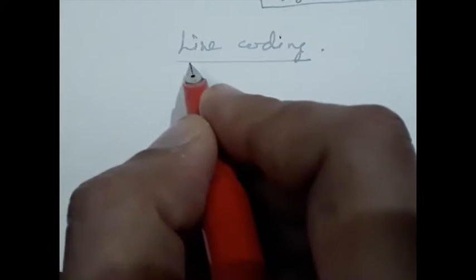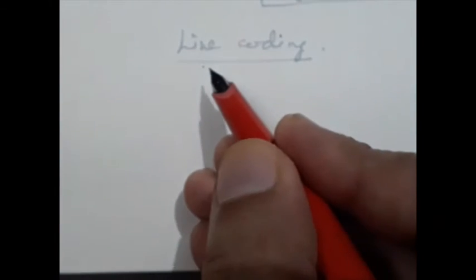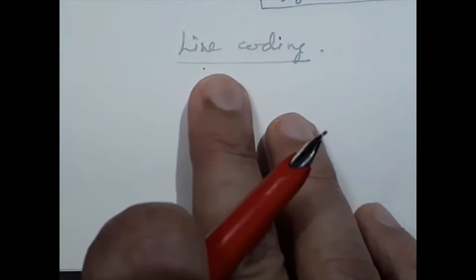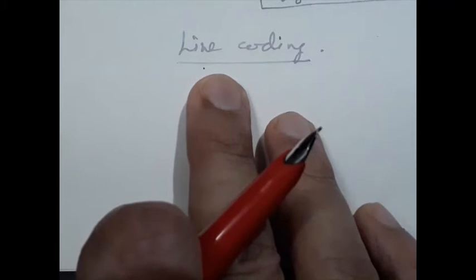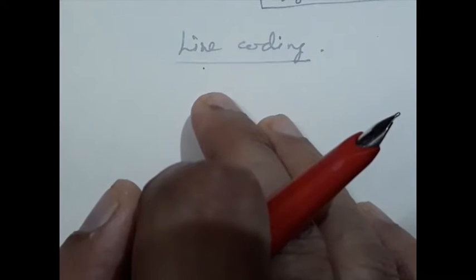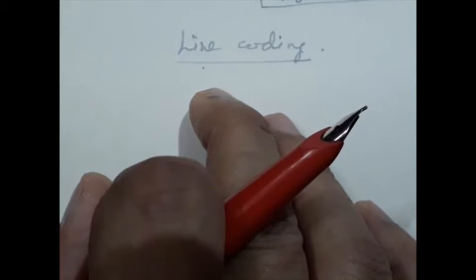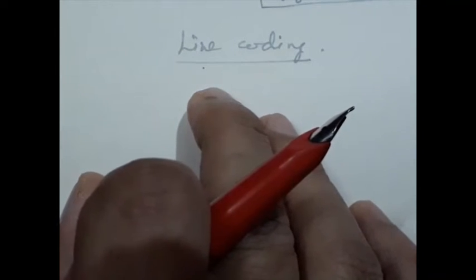Now we will discuss line coding. If we want to transmit some digital data from one place to another, we have to convert this digital data into an equivalent electrical signal because our communication system is electrical. This conversion of digital data into an equivalent electrical signal is called line coding, and the electrical signal obtained after line coding is called the line code or the data format.